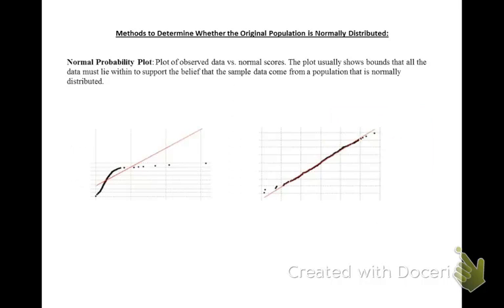I also have two normal probability plots that do not show the bounds that all the data must lie within. Looking at the first one, it looks like there's definitely some kind of non-linear pattern to it. And on top of that, if you were to imagine fitting bounds within here, you can definitely see that there's values that would fall outside the bounds.